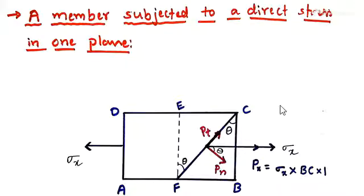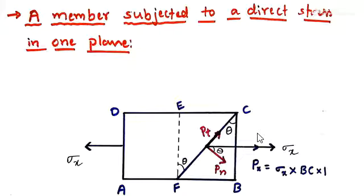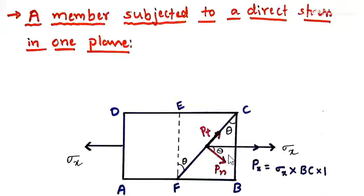We are seeing a case from principal stresses and strains: a member subjected to a direct stress in one plane. A rectangular member is subjected to a direct stress in one plane only. Our aim is to find out normal and shear stresses on the oblique section — a section making some angle with the normal cross section. This is the first case in the principal stresses and strains topic, where a component is subjected to only one direct stress, sigma_x.